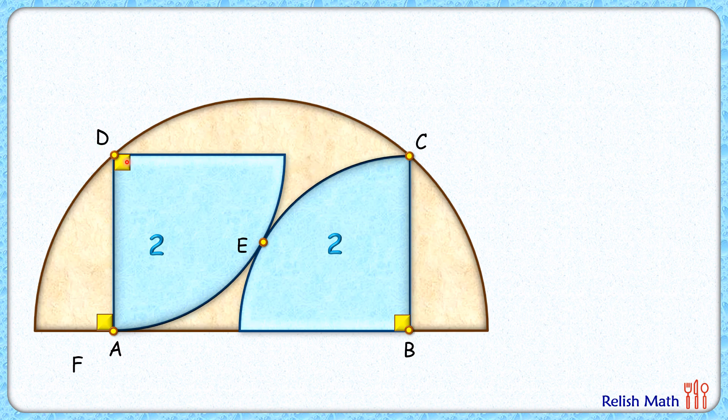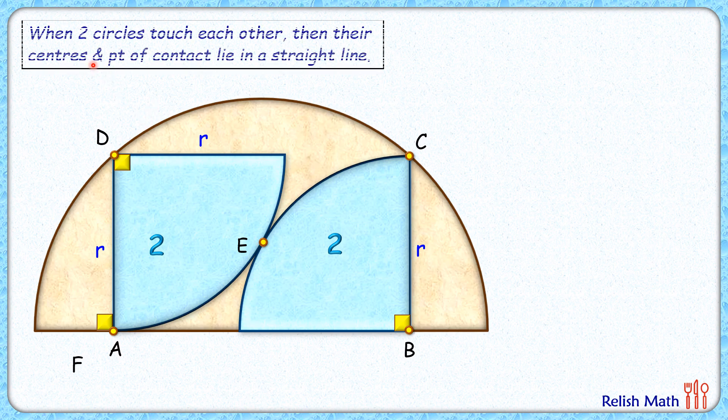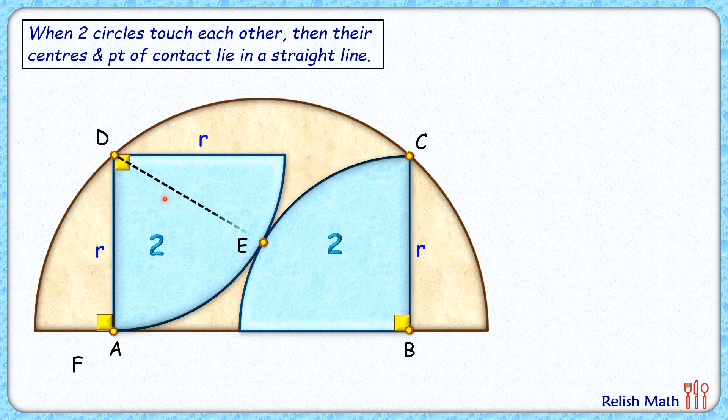Let's start by assuming the radius of these blue quadrants is r cm each. These two blue quadrants are touching each other at point E. We know by theorem that if two circles are touching each other, then their point of contact and their centers—these three points lie in a straight line. The length DE is the same as radius r, and EB is also radius r.